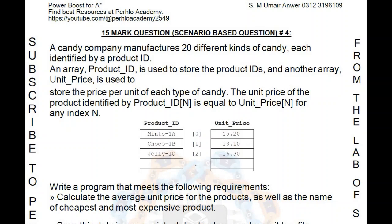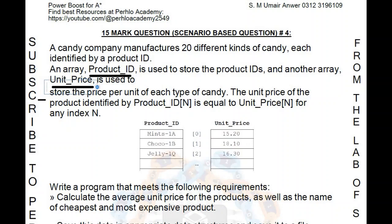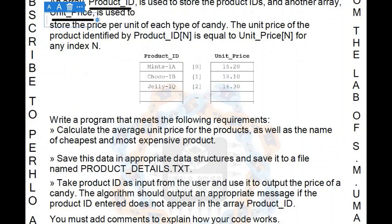Today we are going to discuss another 15-mark scenario-based question. Let's read the question and then look at its solution. A candy company manufactures 20 different kinds of candy, each identified by a product ID. An array called product_id is used to store the product IDs, and another array unit_price is used to store the price per unit of each type of candy. The unit price of a product identified by product_id[n] equals unit_price[n] for any index n. They have also given a diagram — let's understand what they are trying to say.